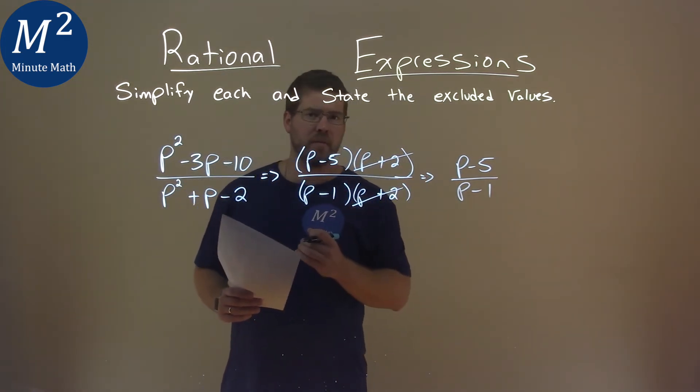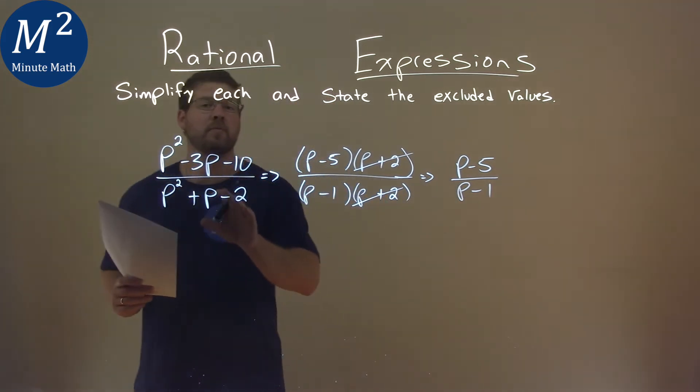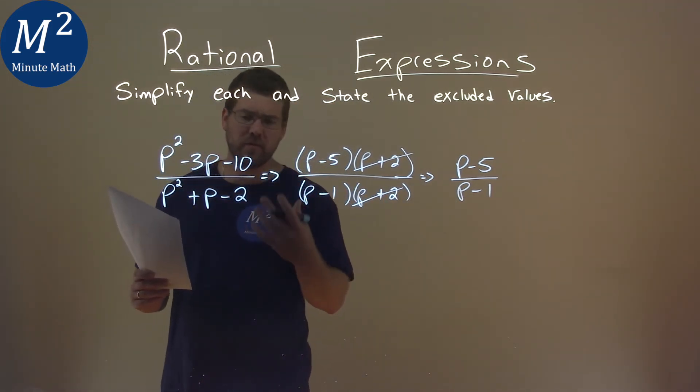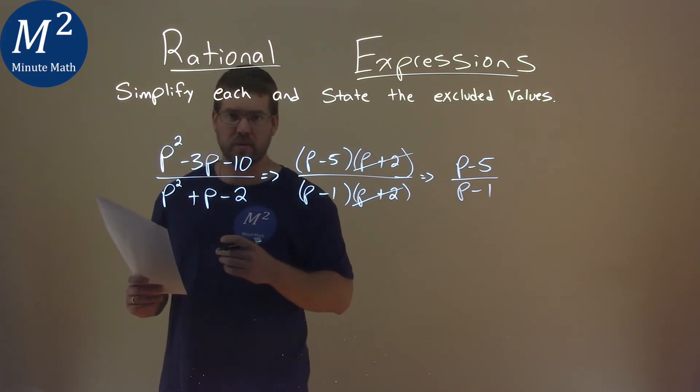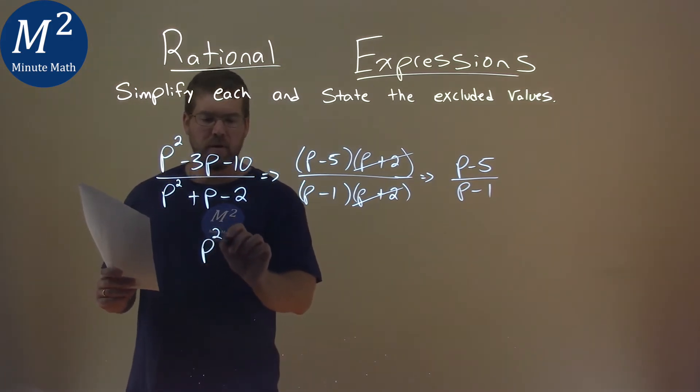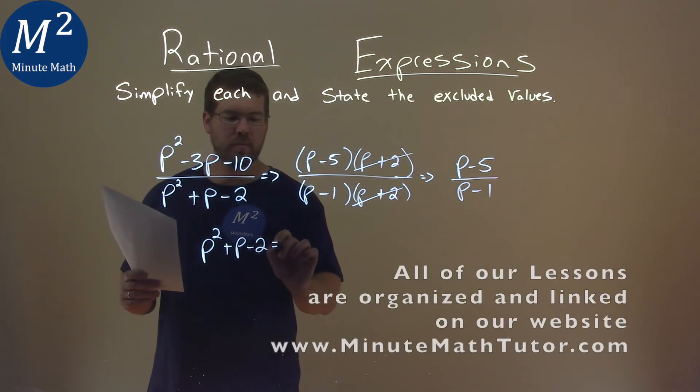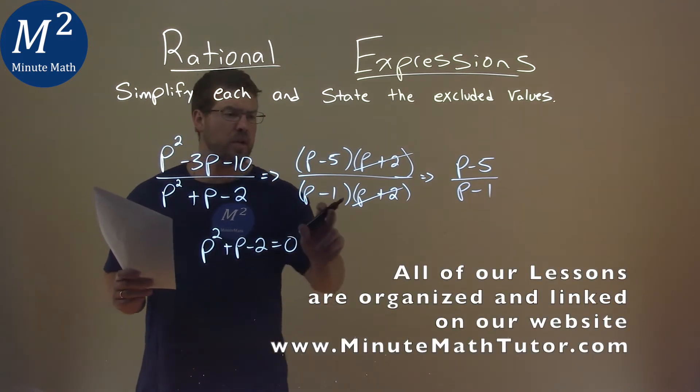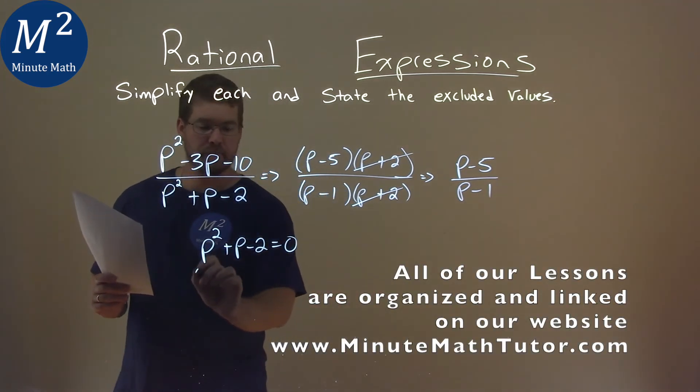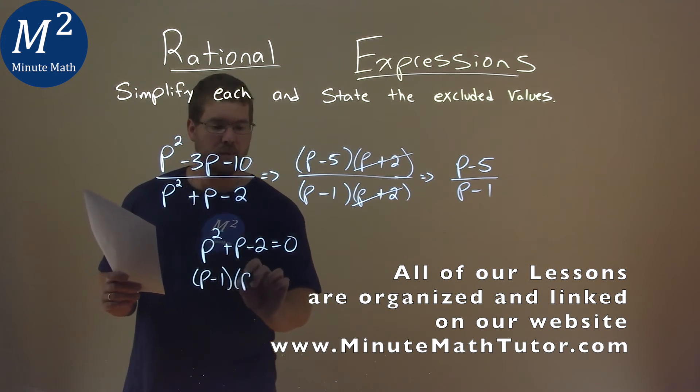But now we define the excluded values. And that derives from our original expression's denominator. We can't divide by 0 so we need to find when this denominator is equal to 0. p squared plus p minus 2 we set equal to 0. Well luckily we already factored it. Make it easy. p minus 1 and p plus 2 here.